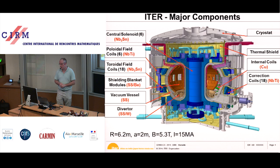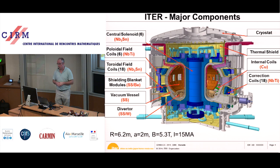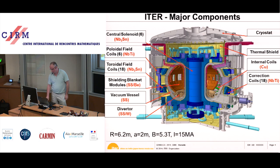We also see the cryostat, which is the big vessel around the whole machine. Inside the cryostat will be vacuum, acting as an insulator, because the coils will all be superconducting. You need to prevent heat from outside from reaching the machine.